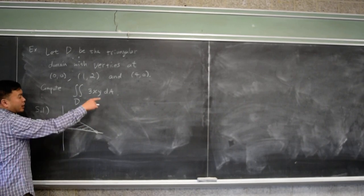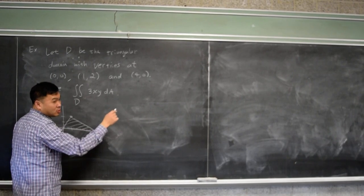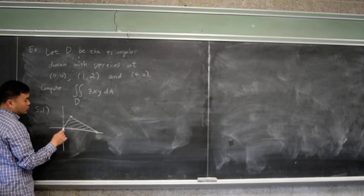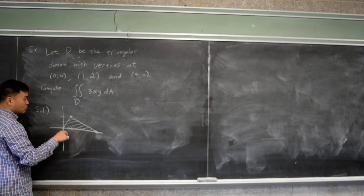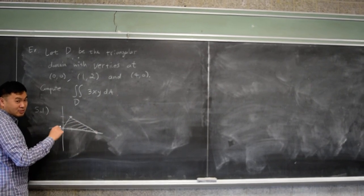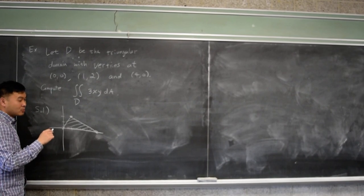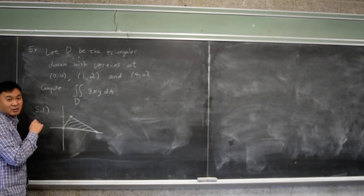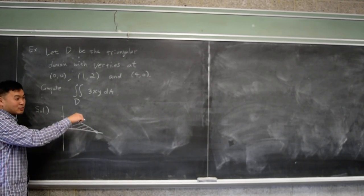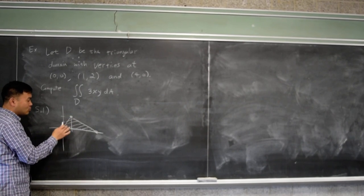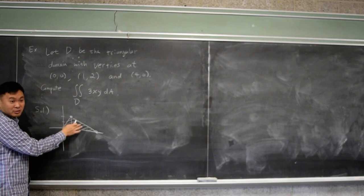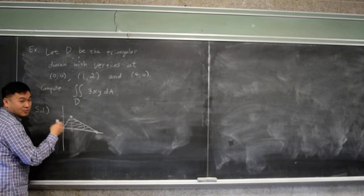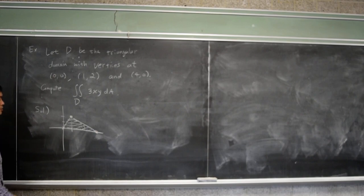You have to change this dA into either dx times dy or dy times dx, and then you have to think about which one to use. Should you paint upwards or should you paint rightwards? Rightwards is the answer. If you try to paint upward, what happens? You have two integrals - one for the left one and one for the right one. But if you try to paint rightwards, you just have a single integral. So that's easier.